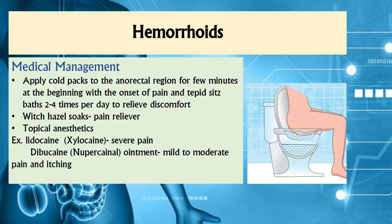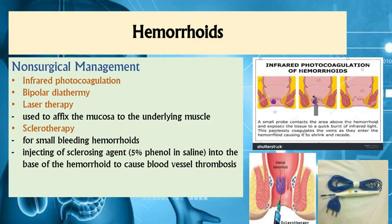For medical management, application of cold packs over the affected area is advised to relieve pressure and manage pain. Topical anesthetics such as lidocaine may be used for severe pain and pruritic management. Non-surgical management includes infrared photocoagulation, bipolar diathermy, and laser therapy, all done to affix the mucosa to the underlying muscle, relieving pressure and constricting the prolapse. Sclerotherapy, indicated for bleeding hemorrhoids, involves injecting a sclerosing agent to promote blood vessel thrombosis or clotting.